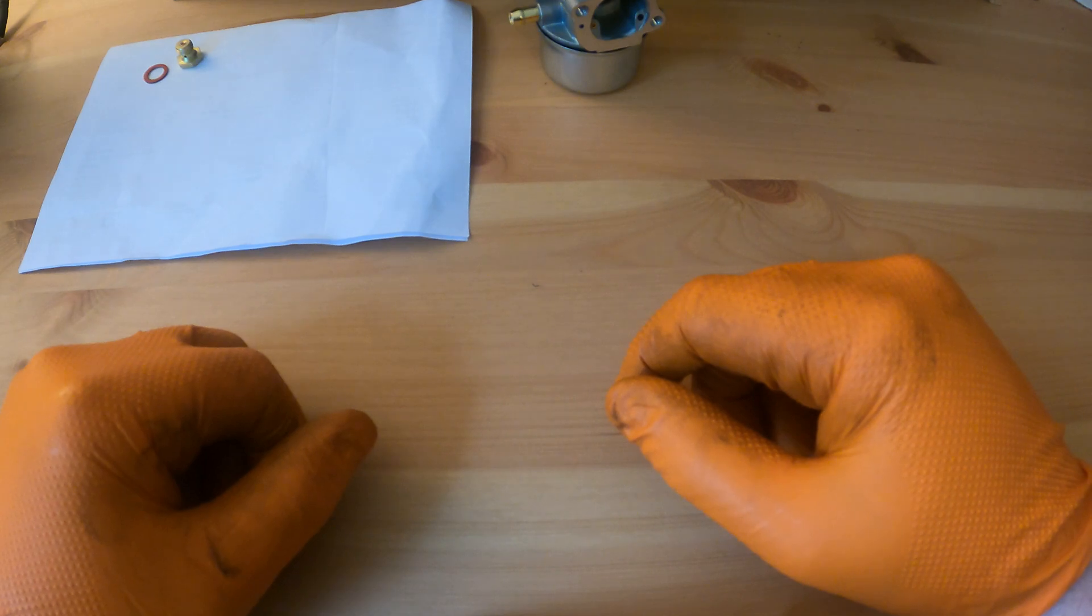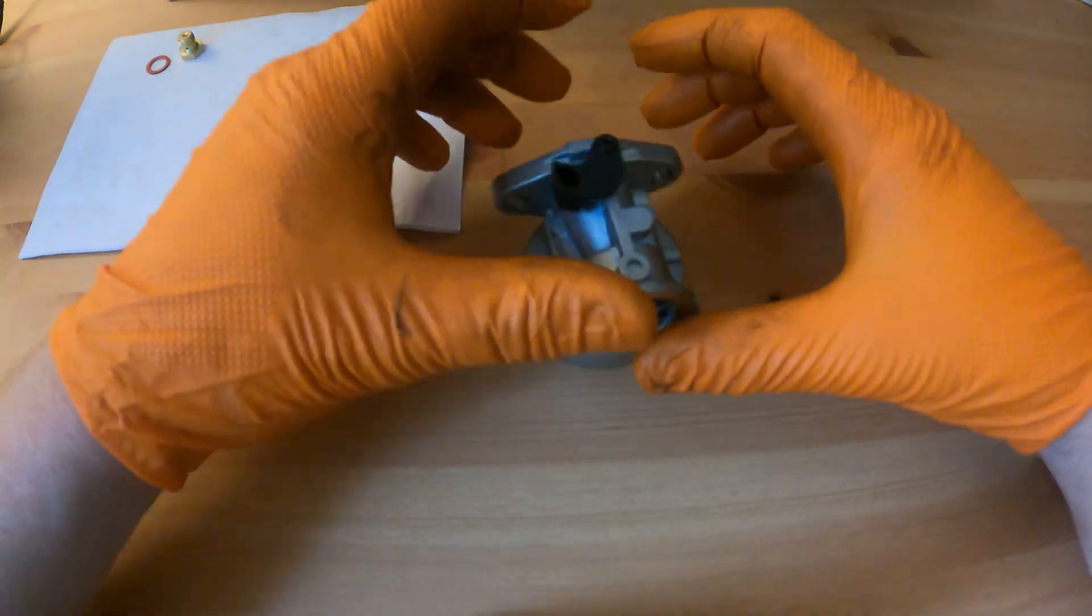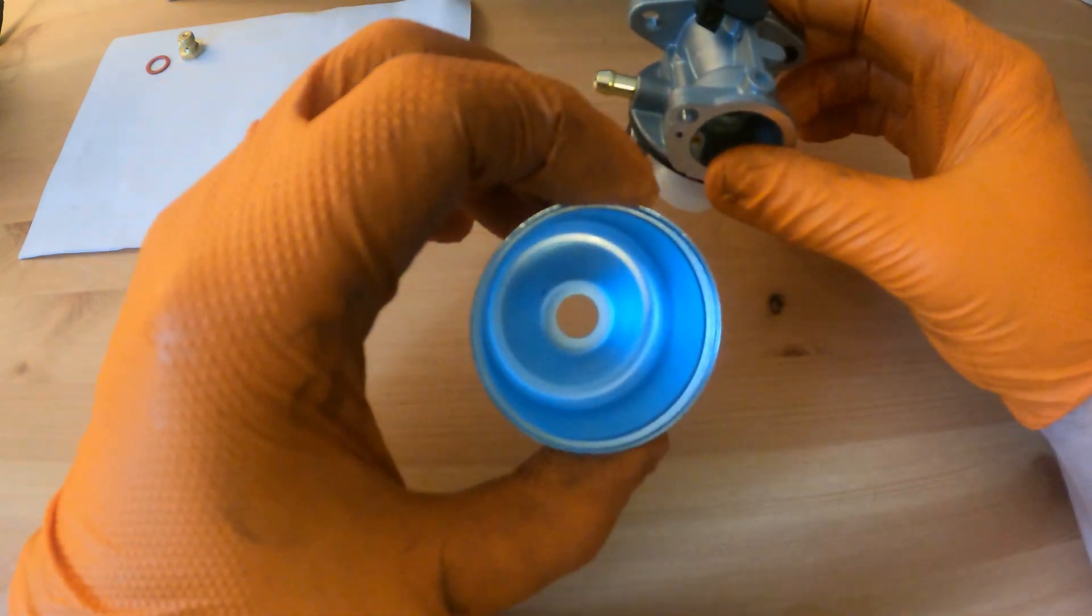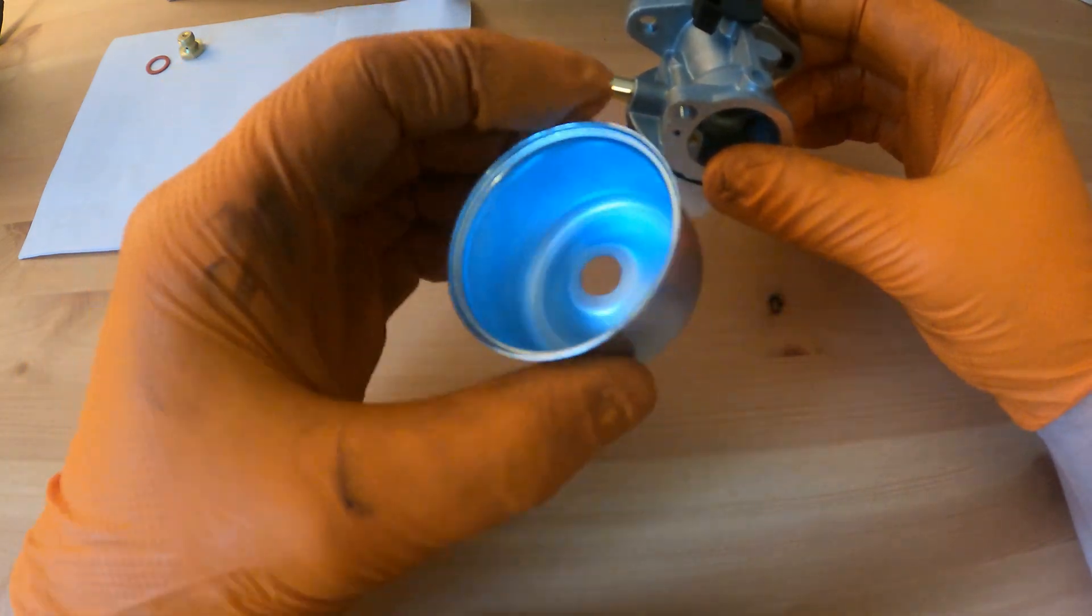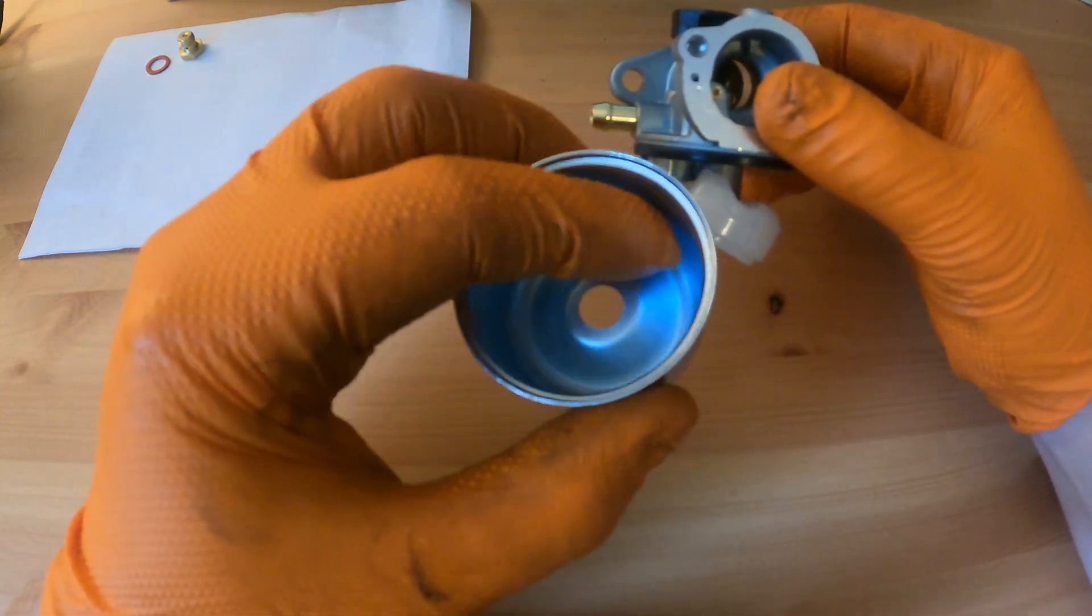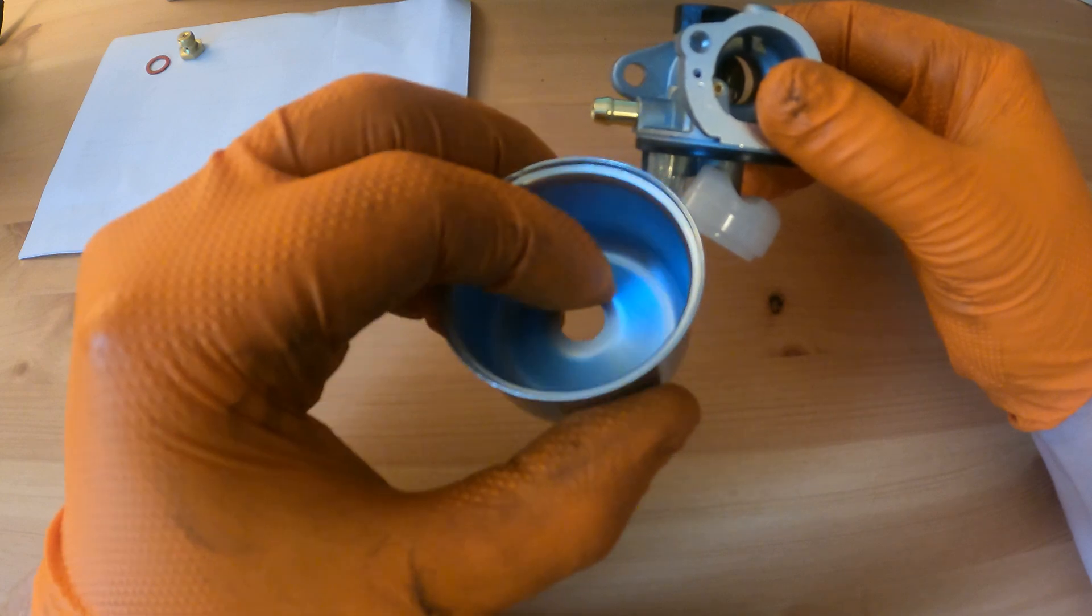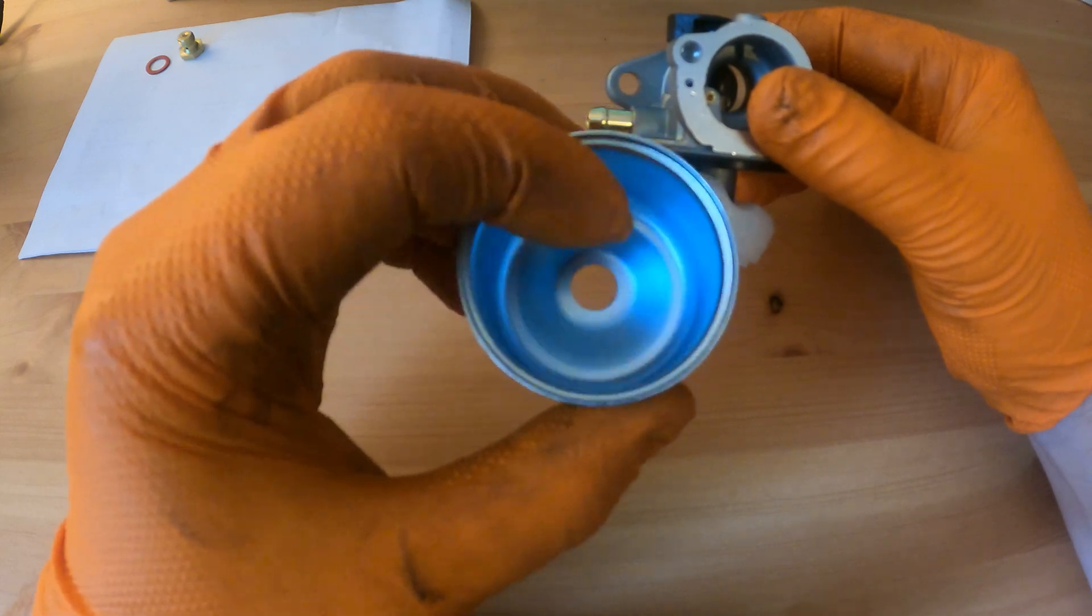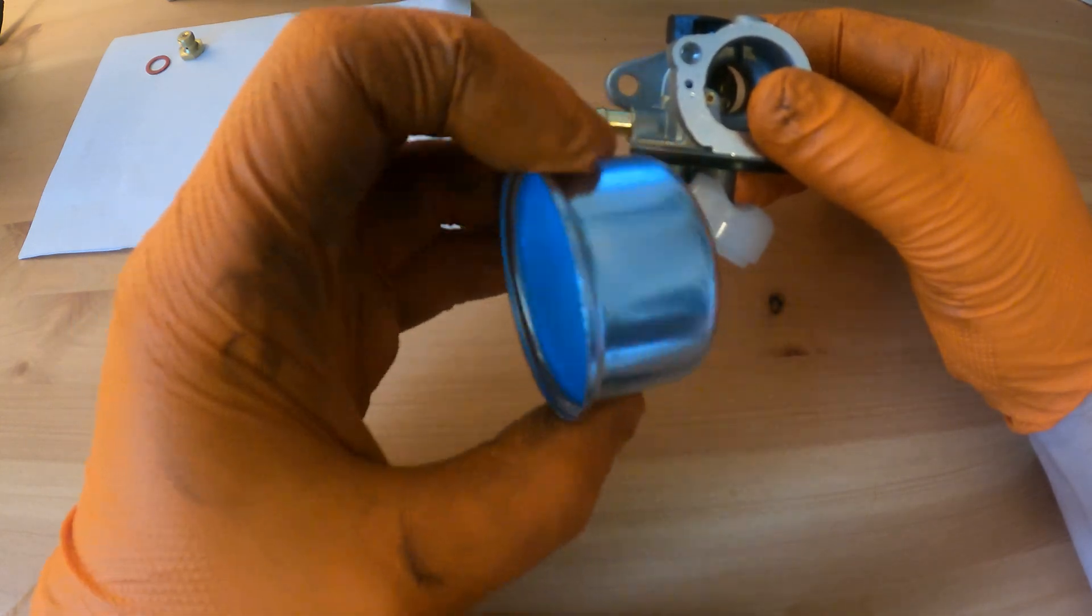Now we've got that bottom plug off, we can remove the float bowl. As you can see this is a clean carburetor, there's no dirt in there at all. You'd expect to see your fuel in there, but with that plug out the fuel would have drained out. If you've got any dirt in there, give that a good clean and put it to one side.